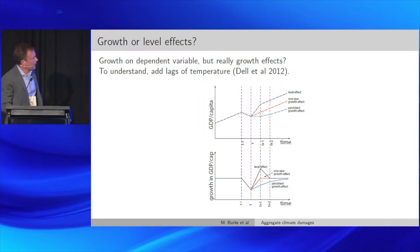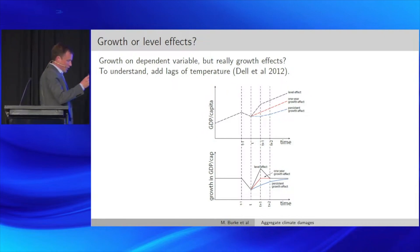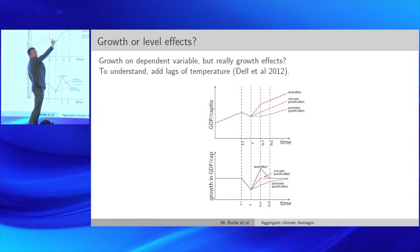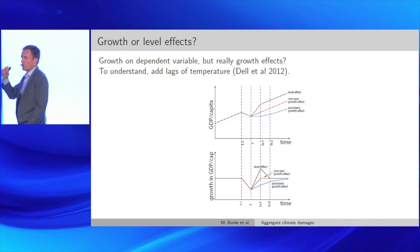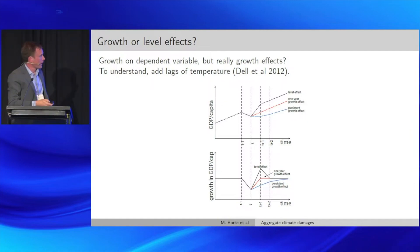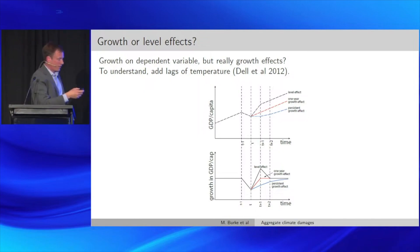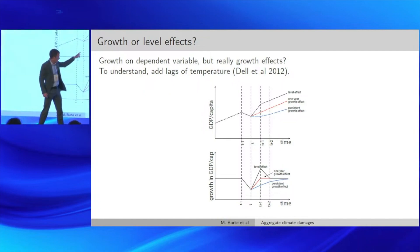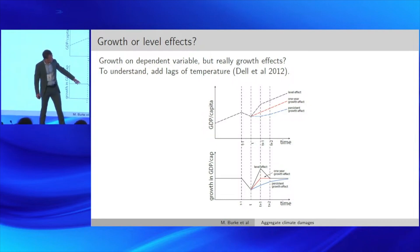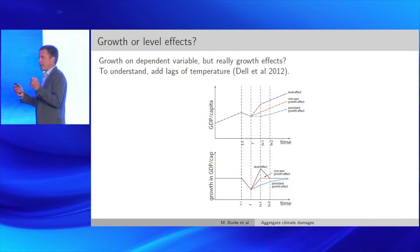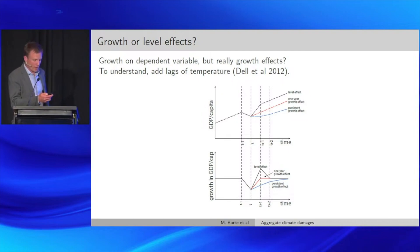If the sum of the distributed lag estimates is different from zero, that's consistent with growth effects; if the sum is zero, that's consistent with level effects. For a level effect: GDP declines in year t, then recovers — you return to your previous path. For a growth effect: you grow more slowly in year t, return to your previous growth rate in year t+1, but there's still a wedge in the level of GDP — you don't return to your previous path. Looking at the sum of distributed lags helps distinguish the two.